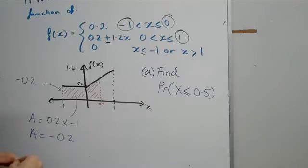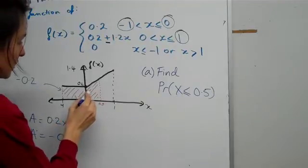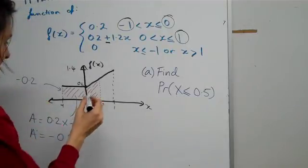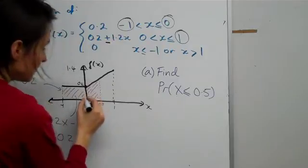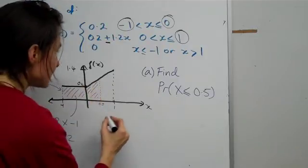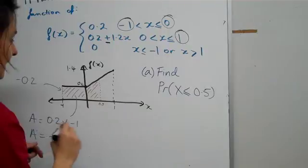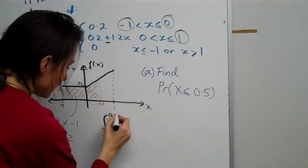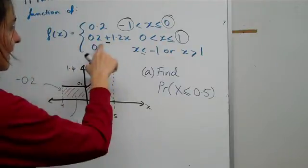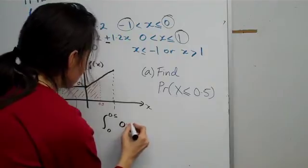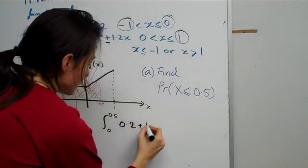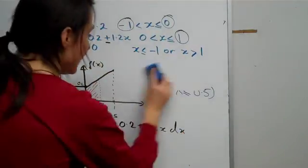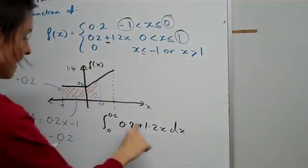And now what we do is we also have to find this area here. In order to find that area there, we just basically should integrate that. We can use a trapezium rule, but it's best to just integrate it. So, if we integrate that, let's just do it here. It's between the maximum 0.5, the minimum 0, and now you know what function you're integrating: 0.2 + 1.2x dx.